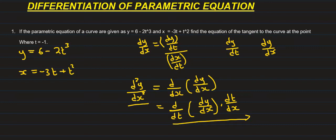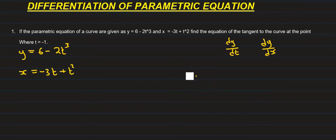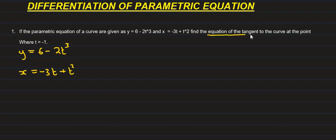The example will make sense to calculate. Number 1: if the parametric equations of a curve are given as y equals to 6 minus 2t cube and x equals negative 3t plus t squared, find the equation of the tangent to the curve at the point where t is negative 1.